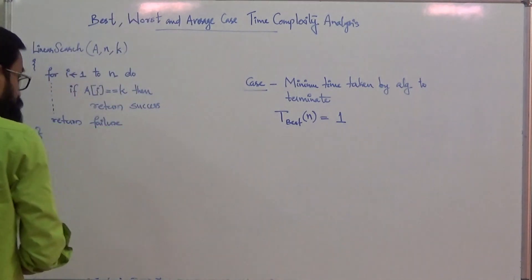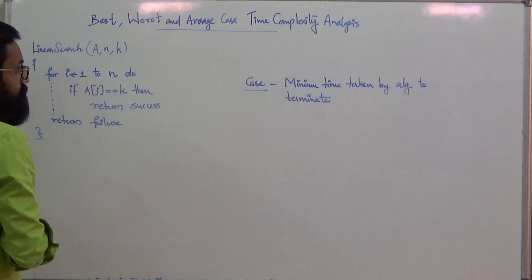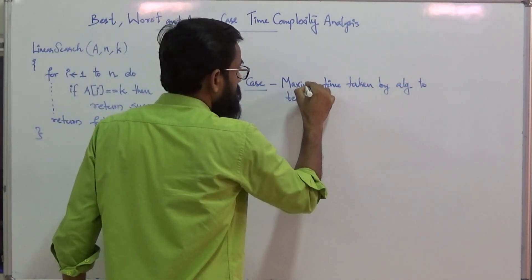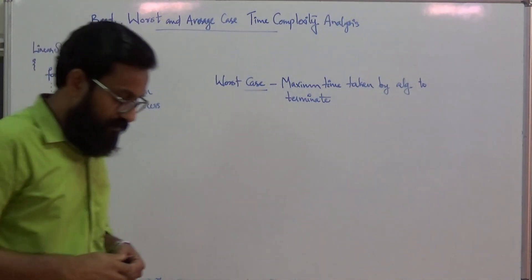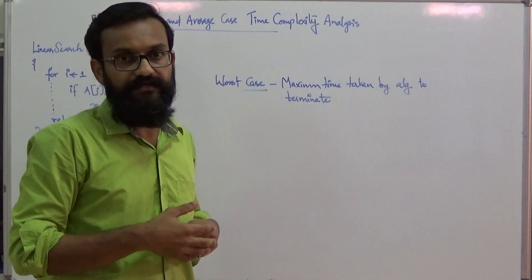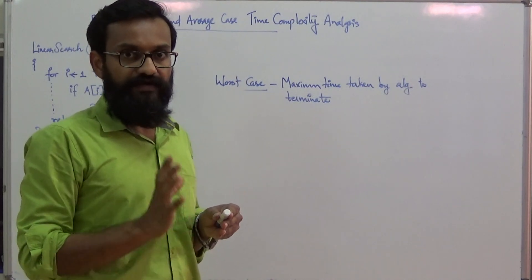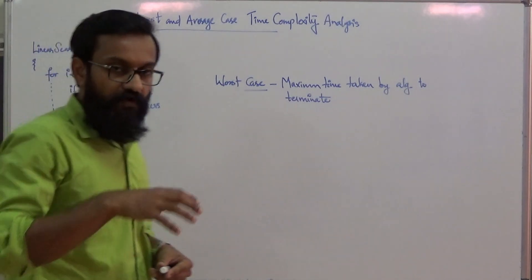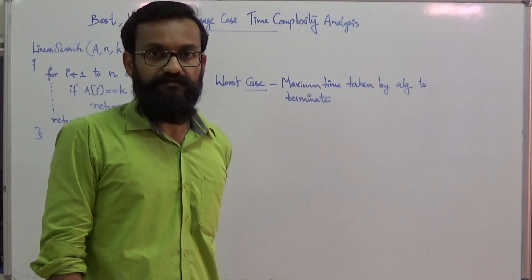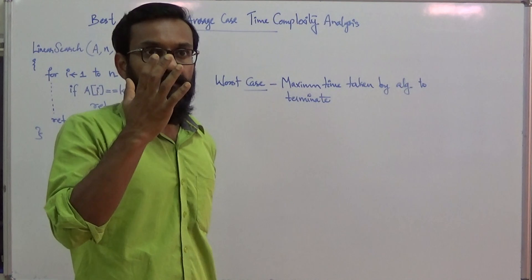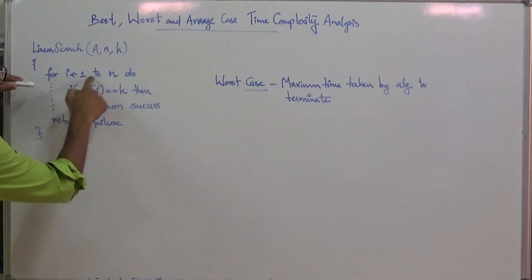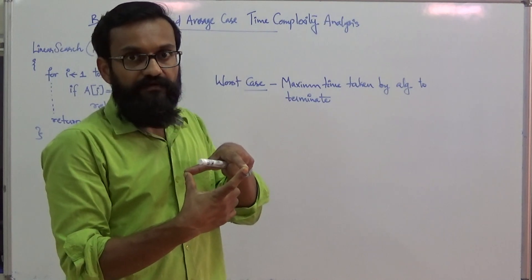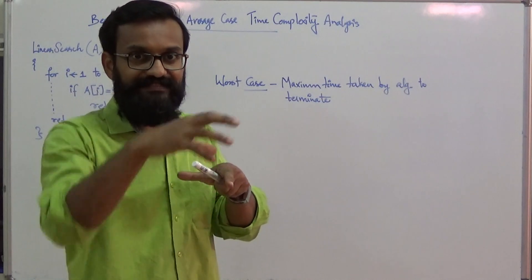Worst case time complexity is the maximum time taken by the algorithm to terminate. Since we analyze based on number of basic operations, this means the maximum number of comparisons. This occurs when the search key is in the last position — the algorithm performs comparisons for i from 1 to n, resulting in n total comparisons.